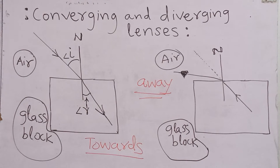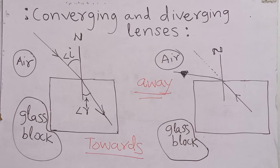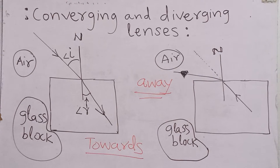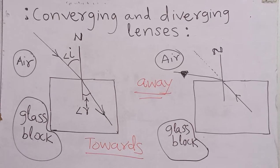Dear friends, welcome to this new video. This video is about the 3 to 4 fundamental terms which are very commonly discussed when we study the theory and properties of converging and diverging lenses. Before we go to the theory of converging and diverging lenses, we will first revise the basic theory of refraction of light and then move to the converging and diverging lenses.